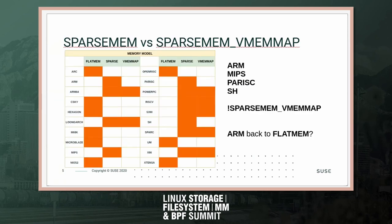I did some research — these are all the architectures we currently support. As you can see, some architectures run on the flat memory model, which are not really a concern here, and then we have other architectures that have both SparseMem and SparseMem VMEMMAP.